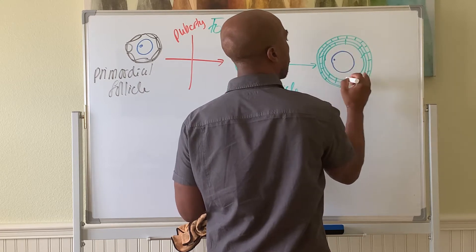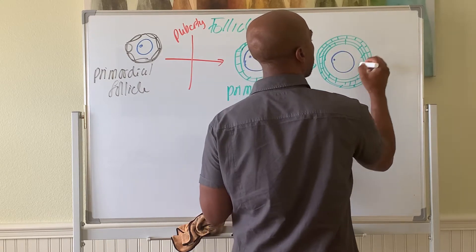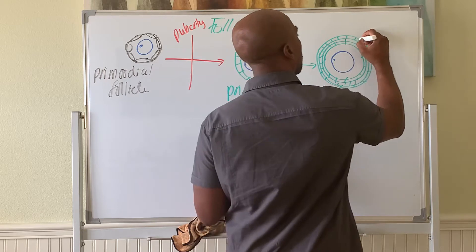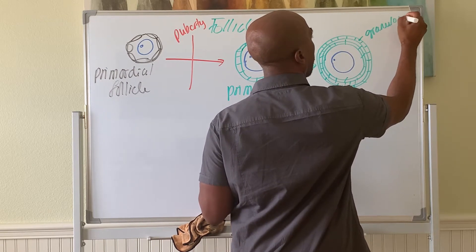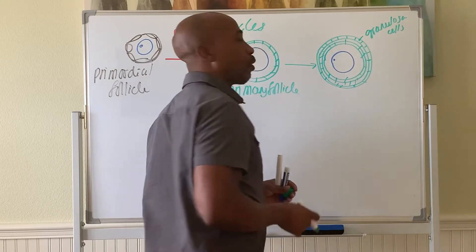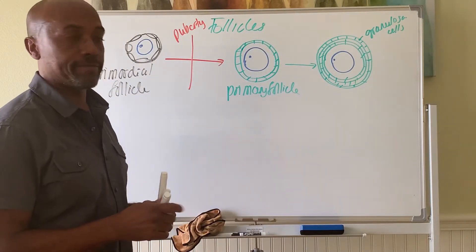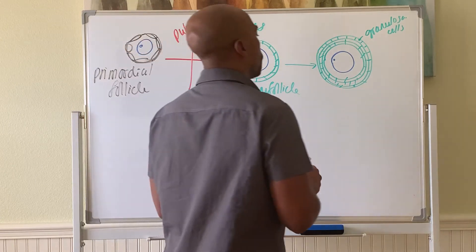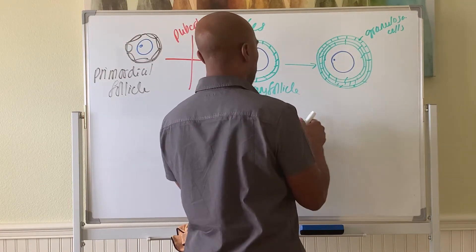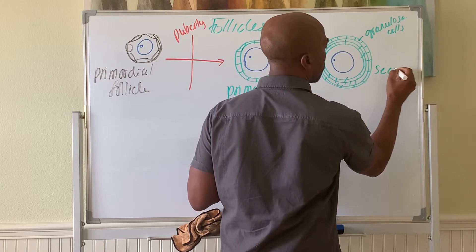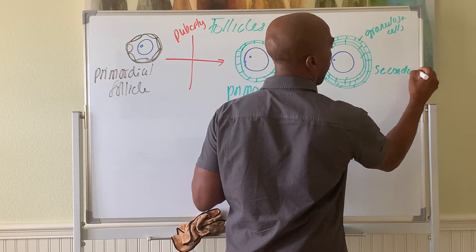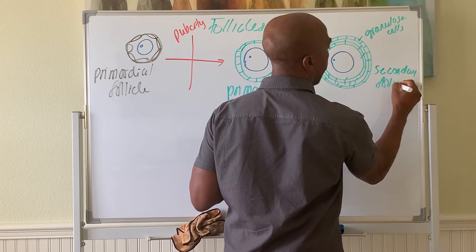And these cell layers around the oocyte, these are your granulosa cells. Eventually these are cells that will make estrogen. So that is the secondary follicle in its earliest stages.